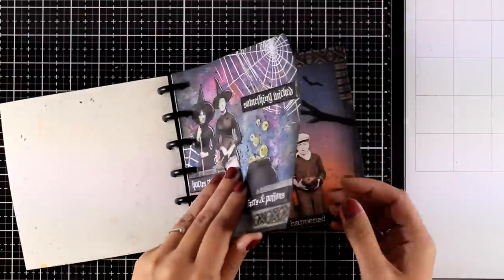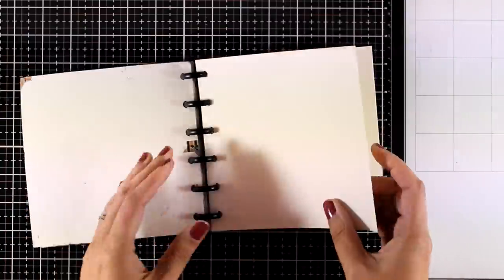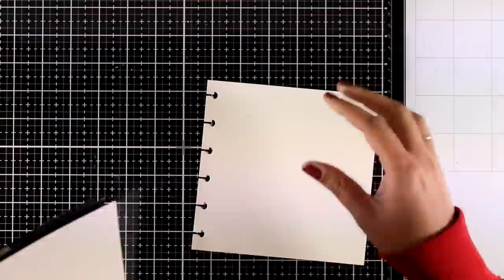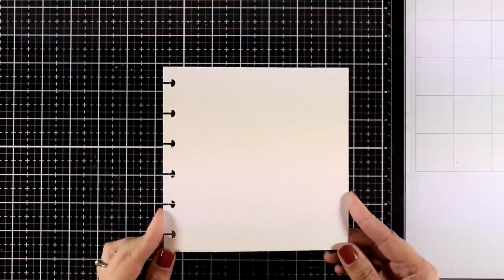Today I will be working on my custom made disc bound journal. This is Distress Mixed Media Paper by Ranger and the size is 6x6.